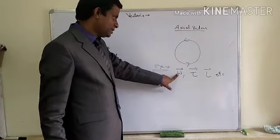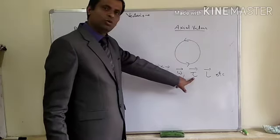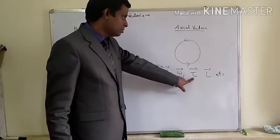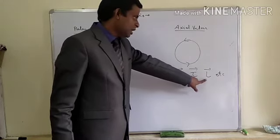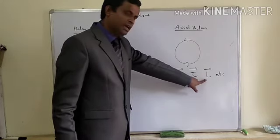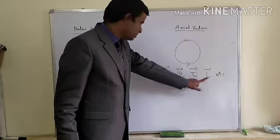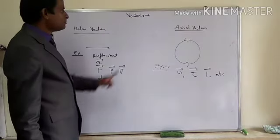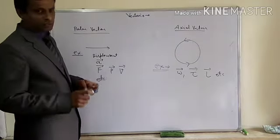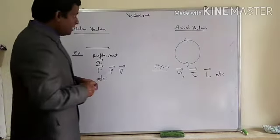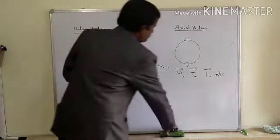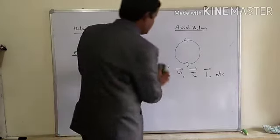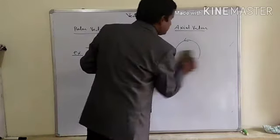Omega is angular velocity, tau is torque, L is angular momentum. These are the axial vectors. So initially there are two types of vectors: one is polar vector and the other is axial vector.